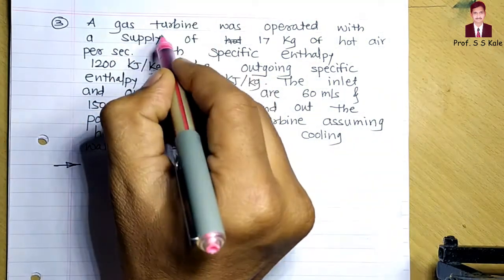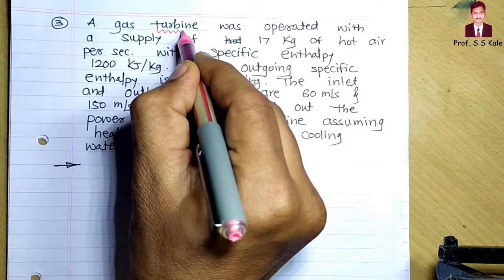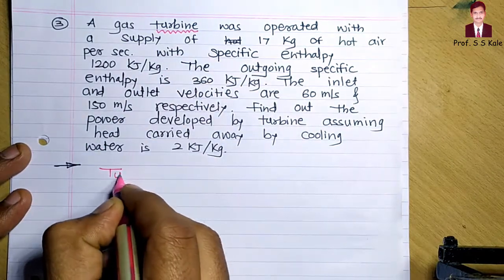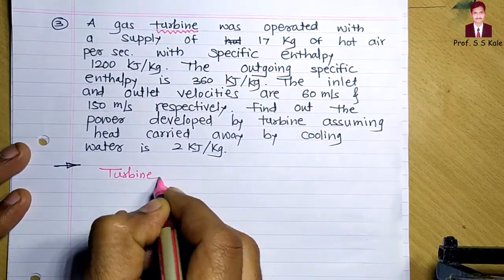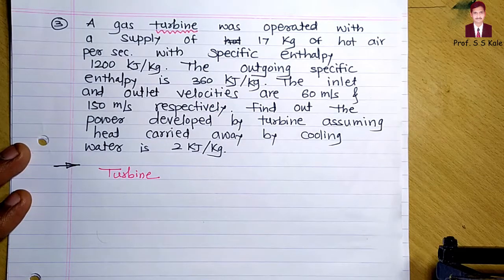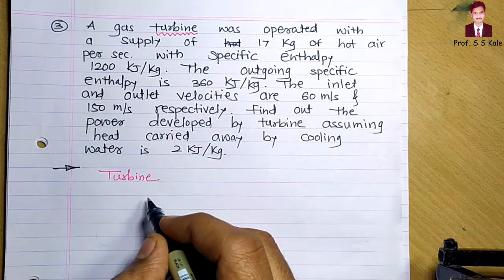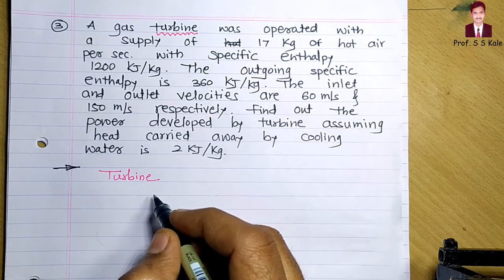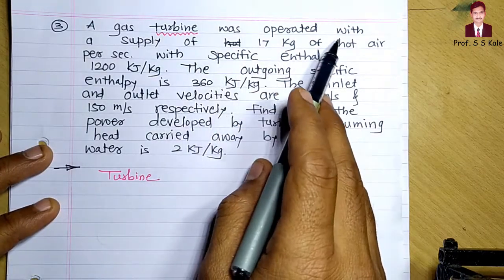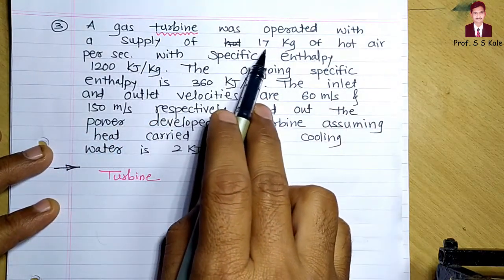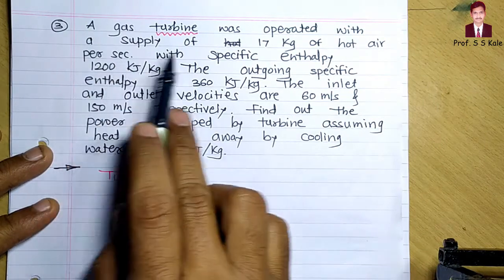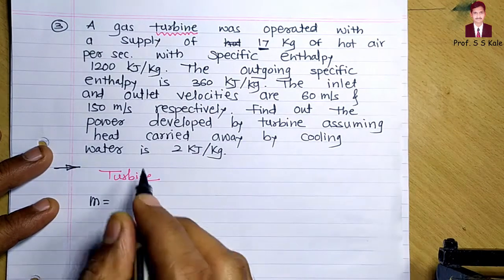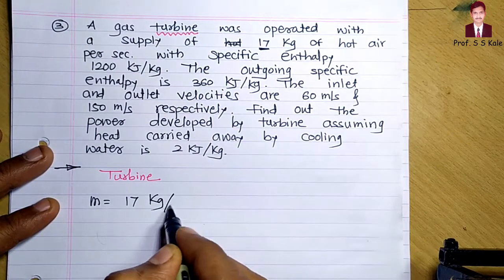The application given in this problem is a turbine. In the steady flow energy equation, you should understand which application is given — here it's a turbine. In the previous problem it was a compressor; now it is a turbine. A compressor consumes power whereas a turbine generates power. The gas turbine is operated with a supply of 17 kg per second of hot air — that is the given mass flow rate.